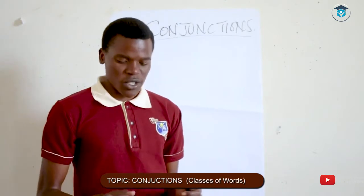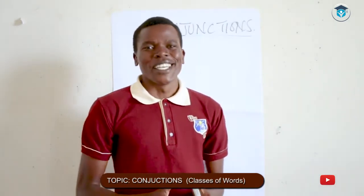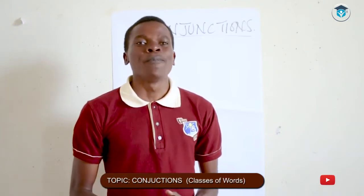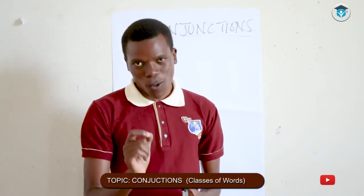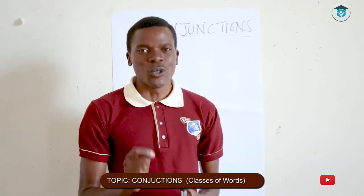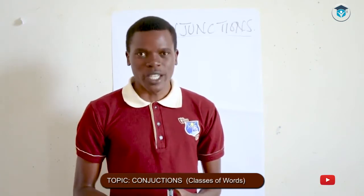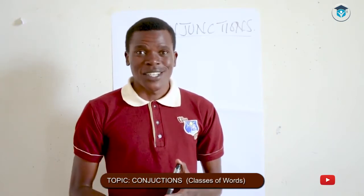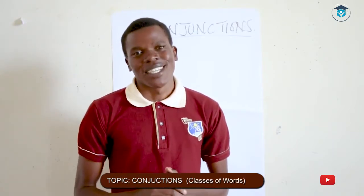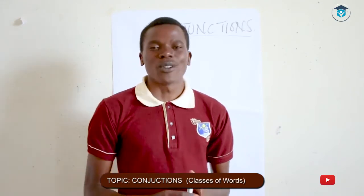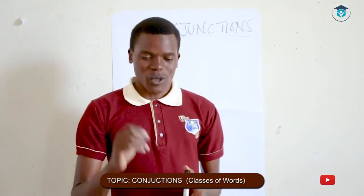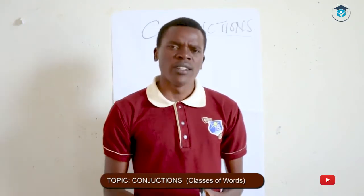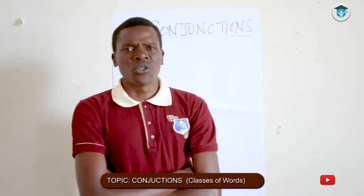What is a conjunction? Simply put, a conjunction is a word used to join words, phrases, clauses, or even sentences. That's what the conjunction is — a word used to join.